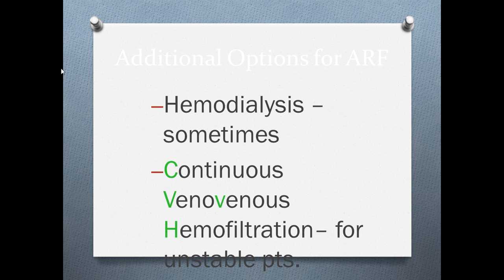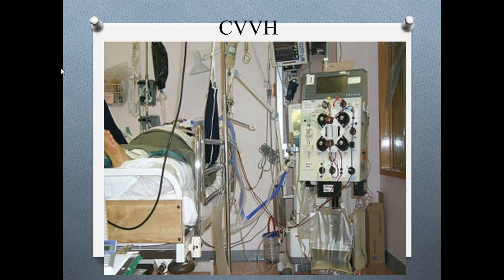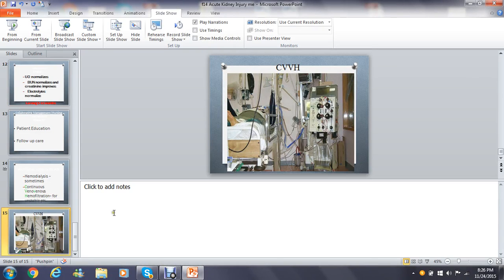Patients may also undergo CVVH — continuous venovenous hemofiltration — which is done for unstable patients in an intensive care setting. You can see the machine and the dialysate bags hanging below. CVVH is performed with a trained registered nurse at a one-to-one patient ratio, and it is only done for unstable patients because it is continuous.